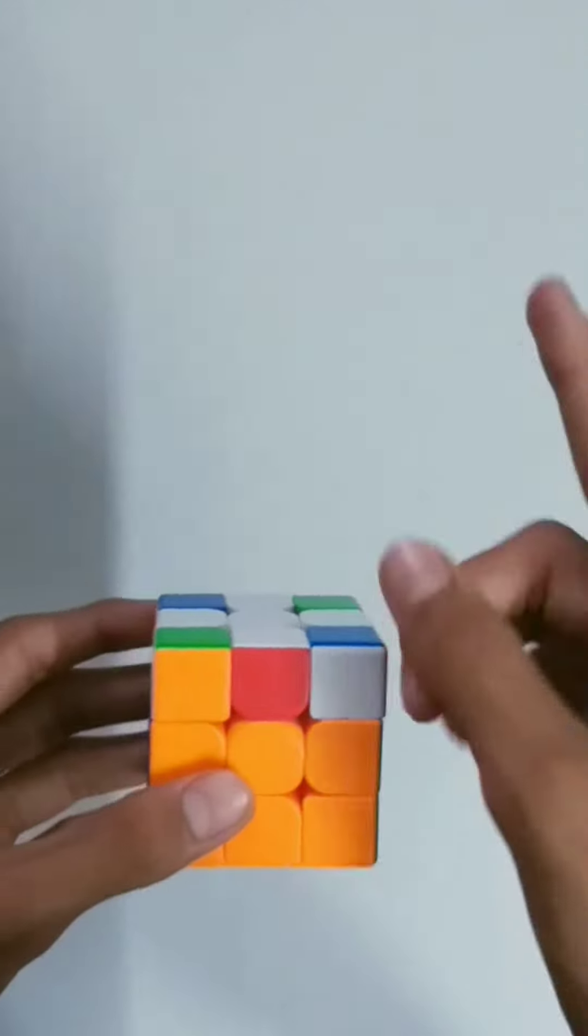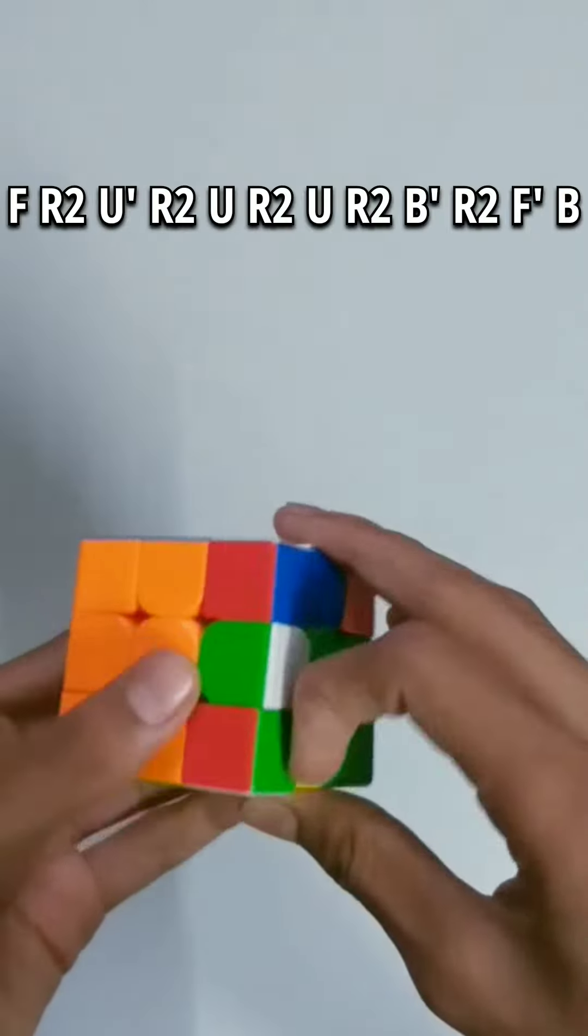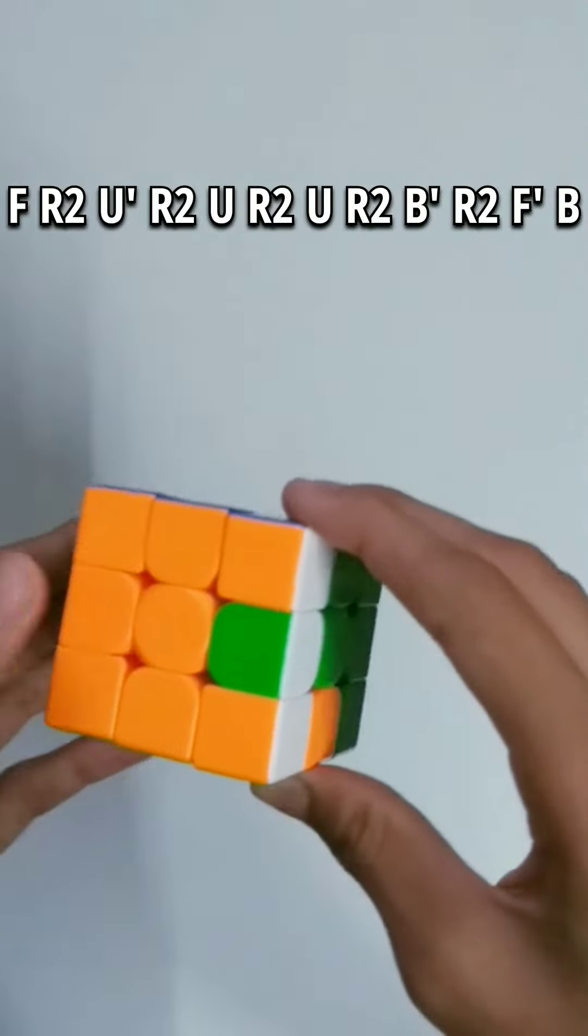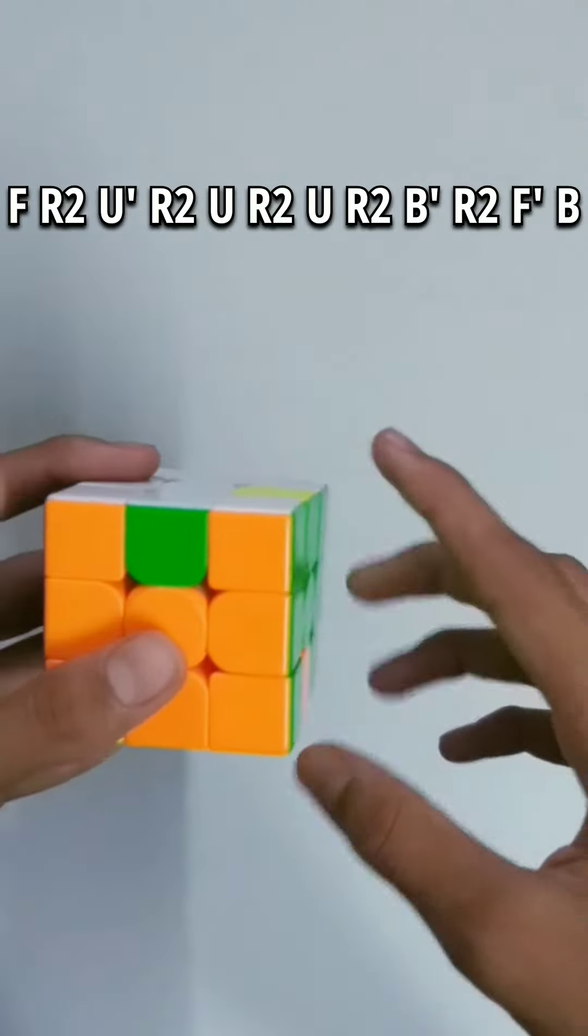Now the algorithm for it will be on top. So it is F R2 U' R2 U R2 U R2, to solve it by doing F' we need S moves.